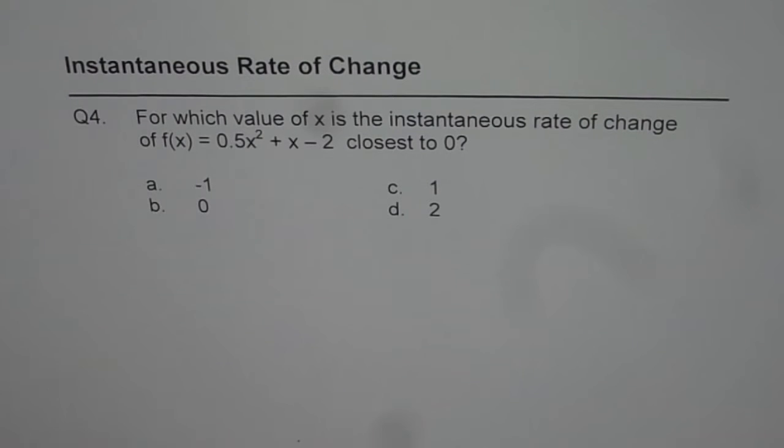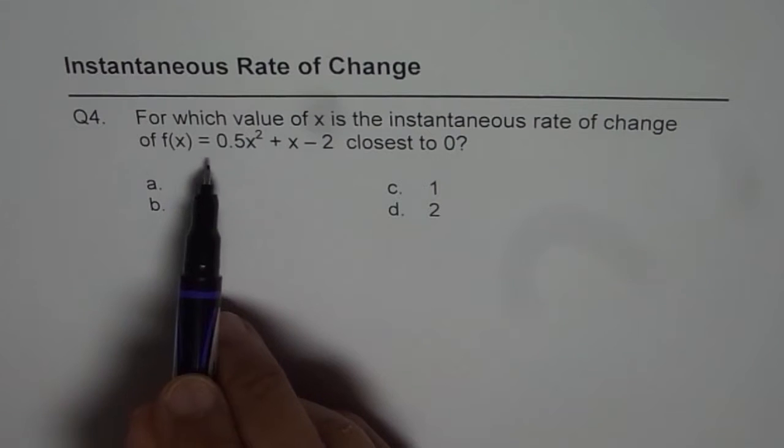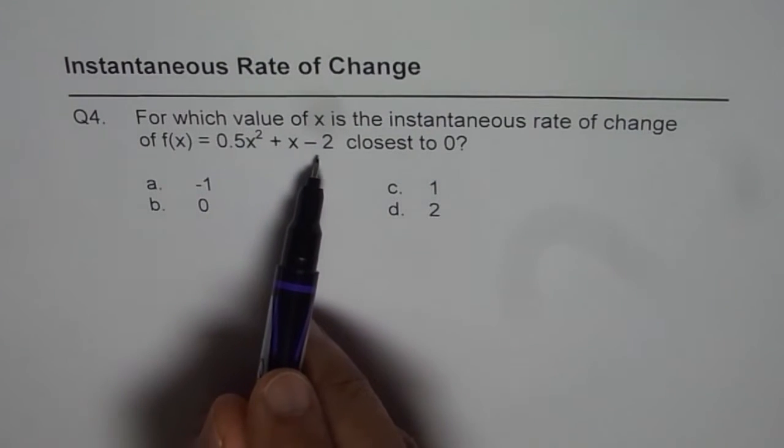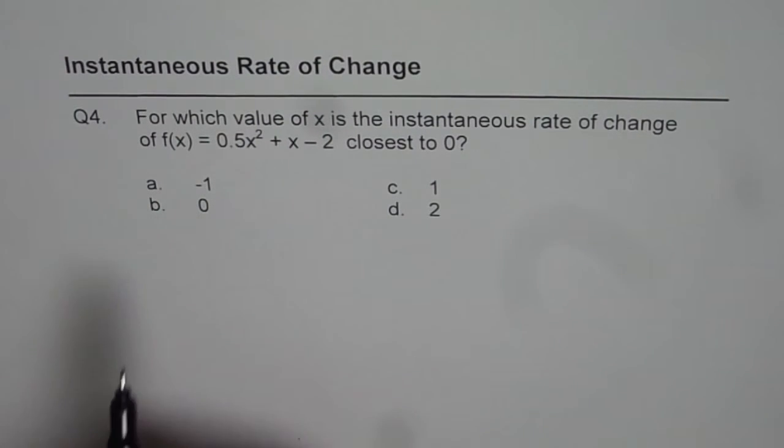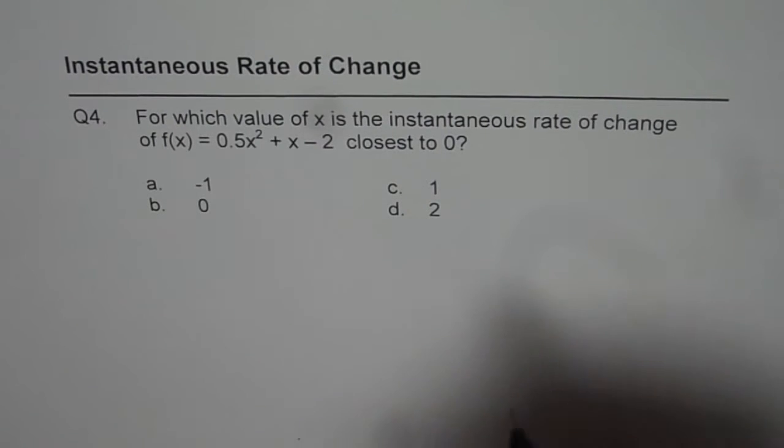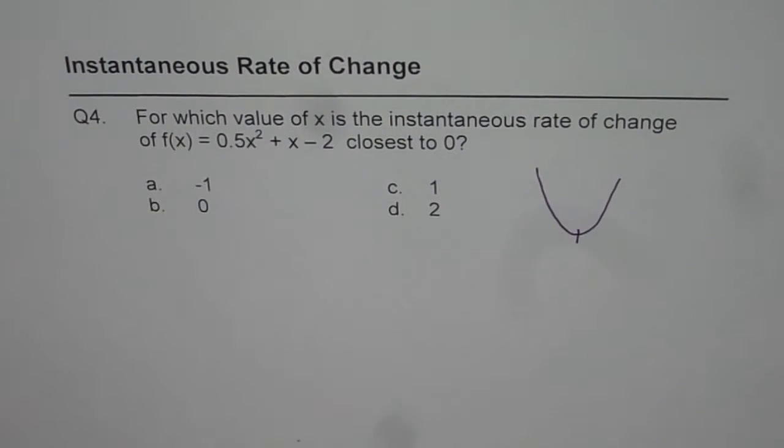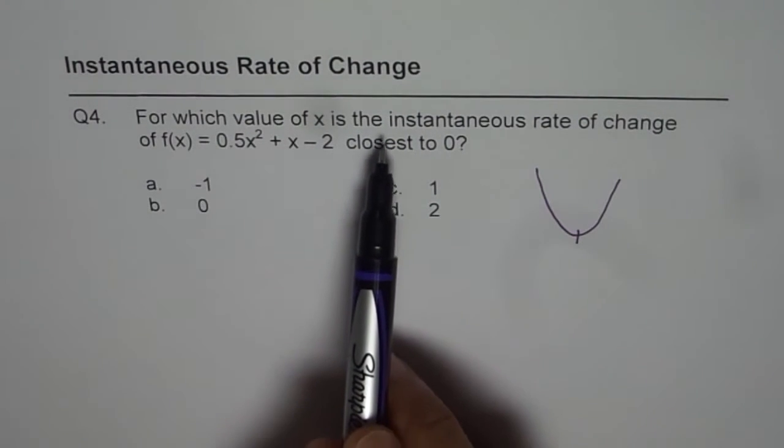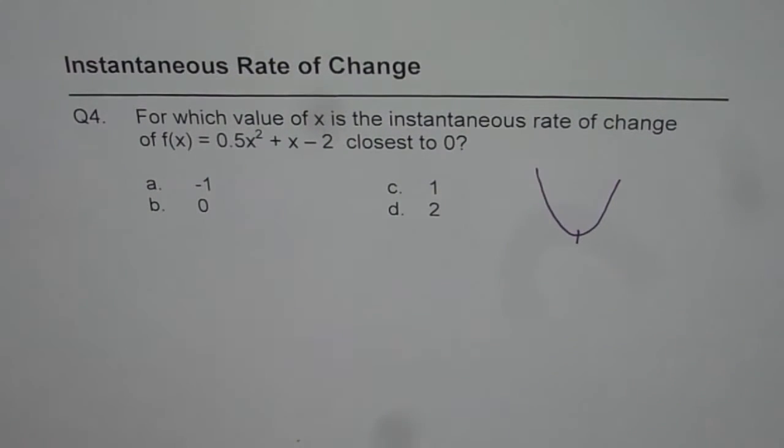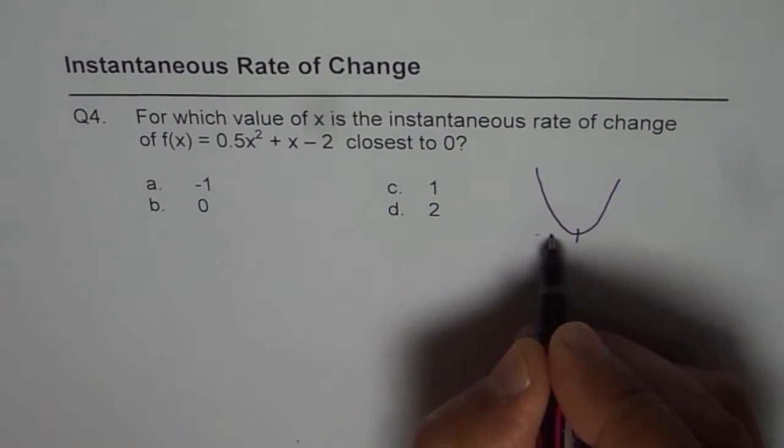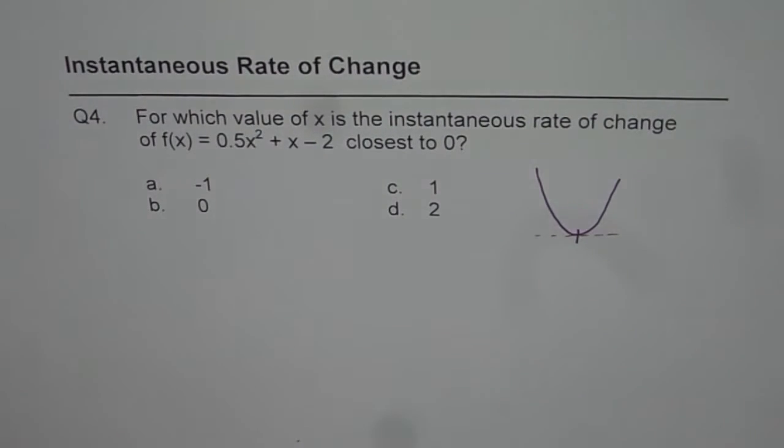But there are a couple of ways in which we can answer this question. Now f(x) = 0.5x² + x - 2 represents a parabola and since this is positive, this is a parabola which opens upwards with a vertex. Now we are looking for instantaneous rate of change closest to 0. That means the tangent has to be horizontal, and which will be there at the vertex.